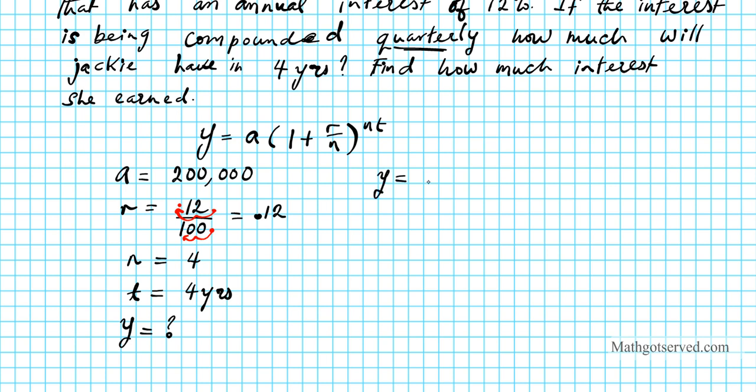So we're going to put all these things into the formula and calculate what y is. We have y equals 200,000 times 1 plus 0.12 over 4, raised to 4 times 4. We'll simplify it a little bit before we plug this into our calculator. This comes out to 0.03, but let me leave it like this because we're going to have the calculator do the calculation for us. 4 times 4 is 16.